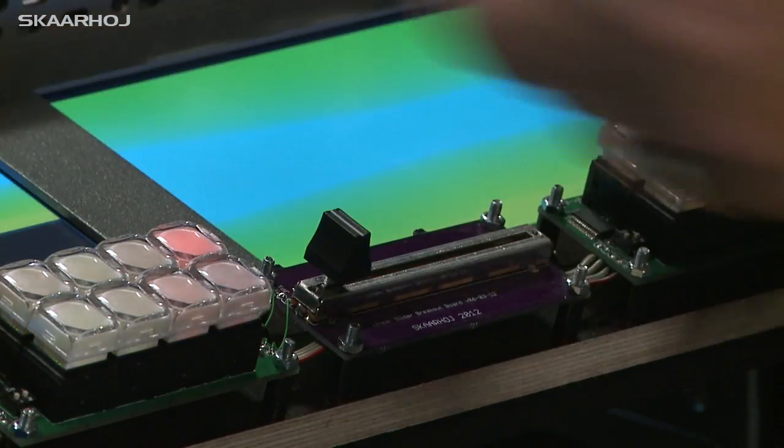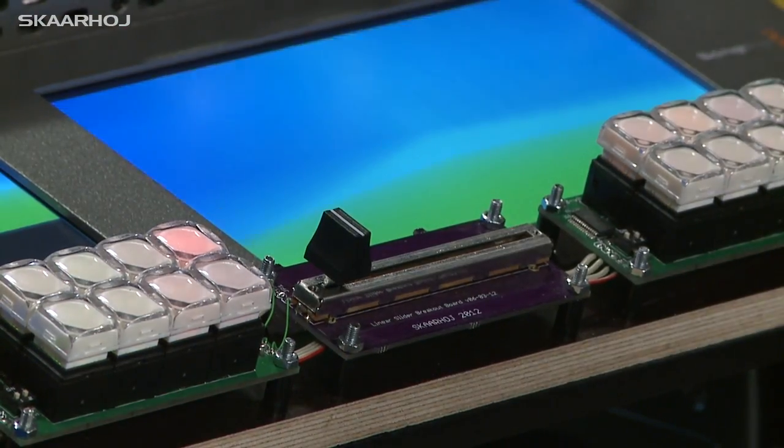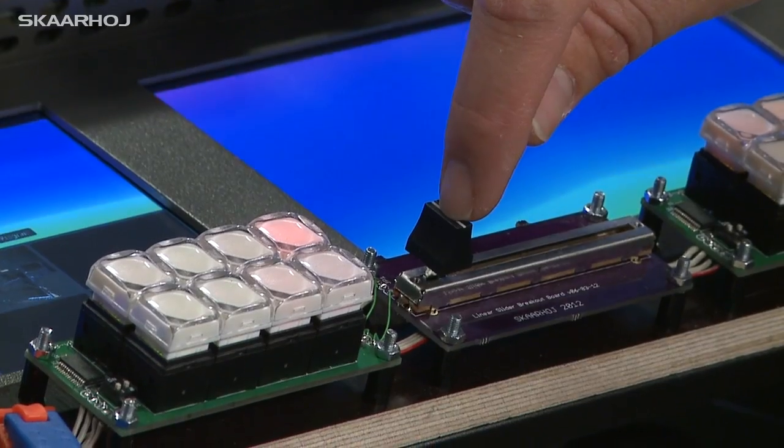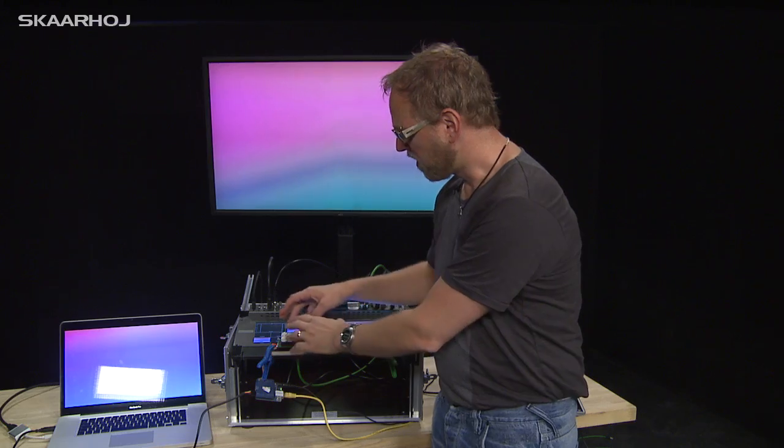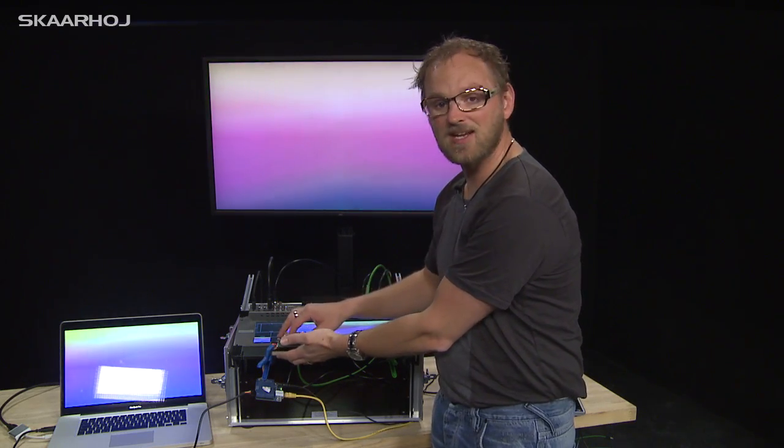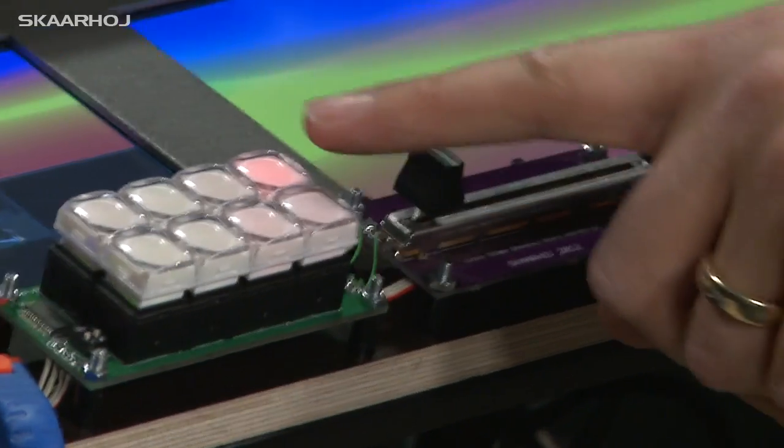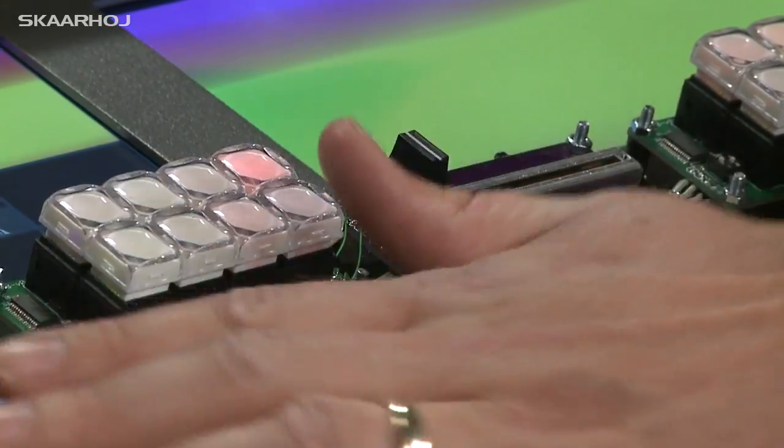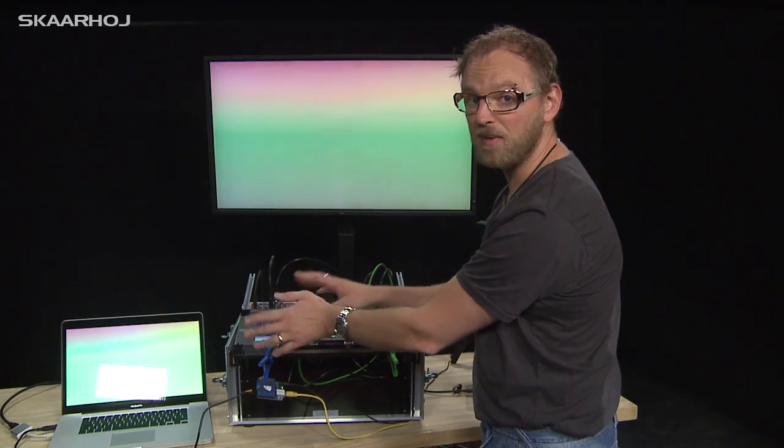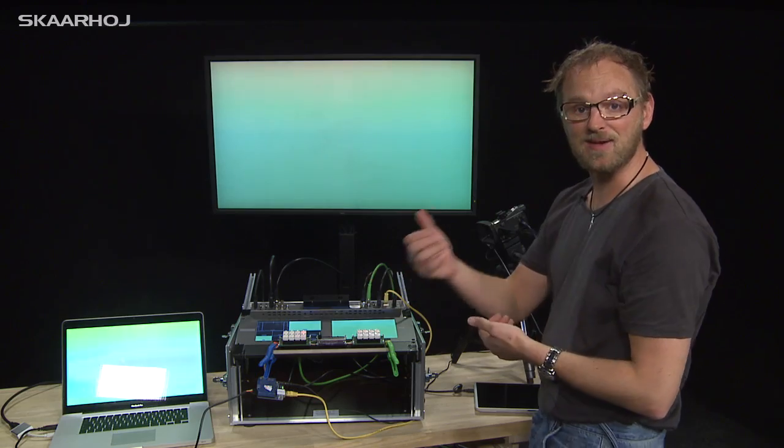So over here I now select my Mac input directly. Oh bummer, I shouldn't have done that because the slider is on this side. Any selection I do will go directly on program out, and it also lights up red indicating that this is program. It's no-go area if I want to select an input source that I can mix to.